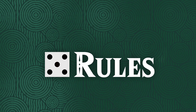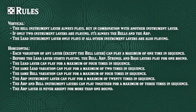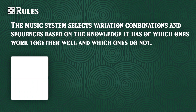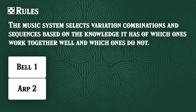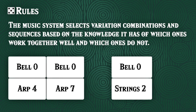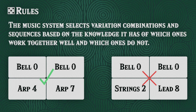But there are rules to this randomization. I'll list all of the patterns and rules I was able to spot, and you can pause the video to read them all if you're interested. To summarize: the music system selects variation combinations and sequences based on the knowledge it has of which ones work together well and which ones do not.